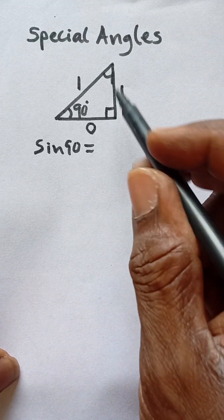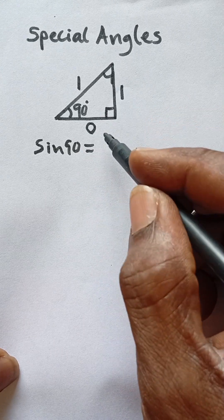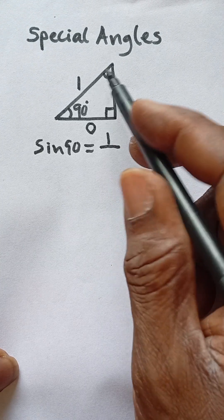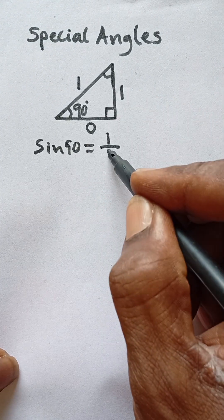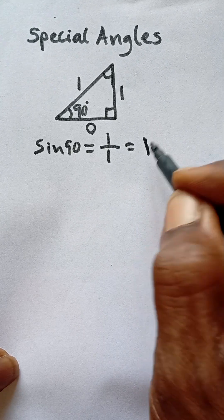...to the opposite side of this triangle. We're using this 90, so this side is the opposite. The opposite side is one divided by the hypotenuse, which is also one. So that gives us sine 90 as one.